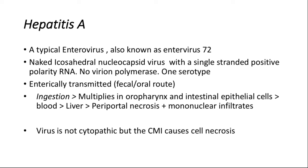Hepatitis A virus is a distinct member of the Picornavirus family, also known as enterovirus 72. It is an RNA virus, non-enveloped, with only one serotype and seven known genotypes. It replicates in the liver and is excreted in the bile, then in the feces of infected persons for about two weeks before the onset of clinical illness and up to one week post-symptoms. It is estimated to be the causative agent of more than 40 to 50% of acute hepatitis cases — the most common viral hepatitis virus.